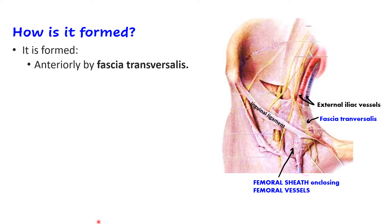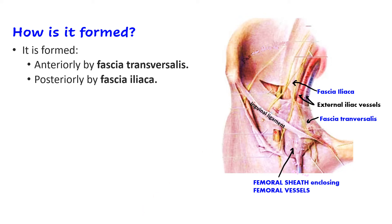The posterior aspect of the femoral sheath is contributed by the fascia iliaca, which covers the iliacus muscle. So the femoral sheath is formed anteriorly by fascia transversalis and posteriorly by fascia iliaca. Importantly, the femoral nerve lies outside the femoral sheath — it is not enclosed within it.